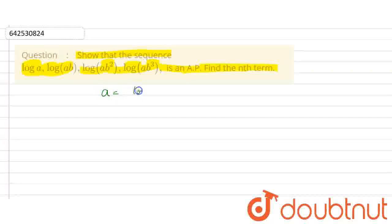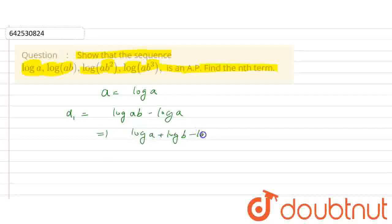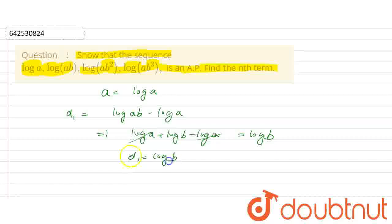The sequence we have here — the first term a is equal to log(a). First, I will find the common difference d1, that is, second term minus first term, so this is log(ab) minus log(a). We know the property that log(mn) = log(m) + log(n), so this is log(a) + log(b) minus log(a). The log(a) terms cancel, and we get log(b). So d1 is equal to log(b).